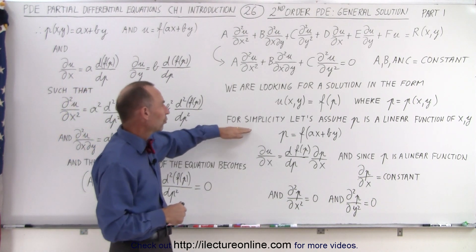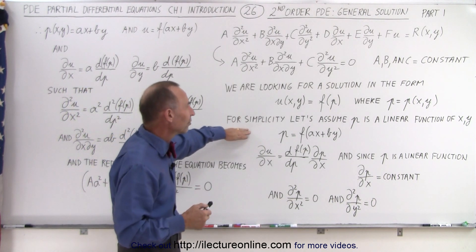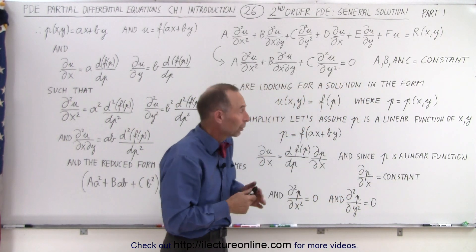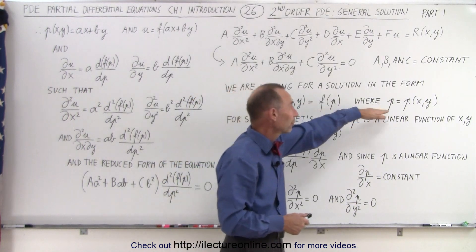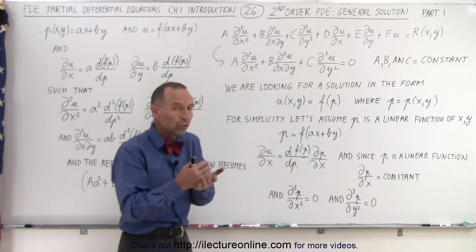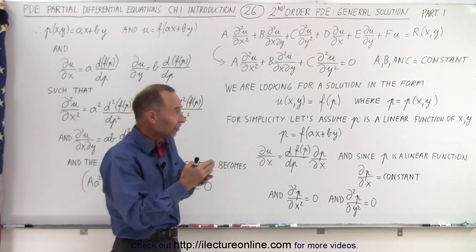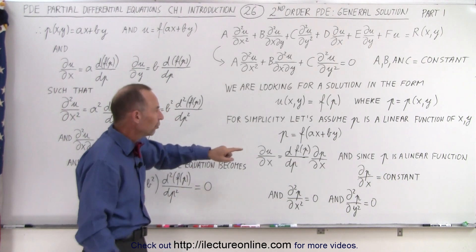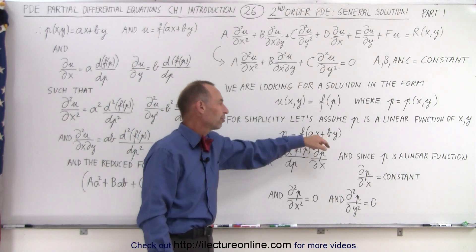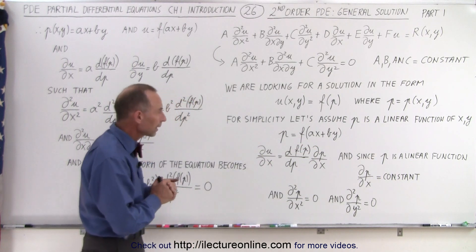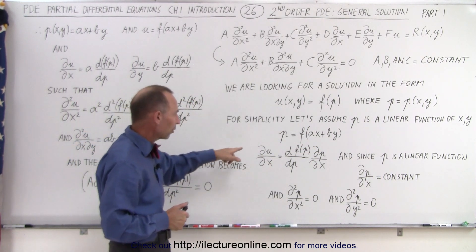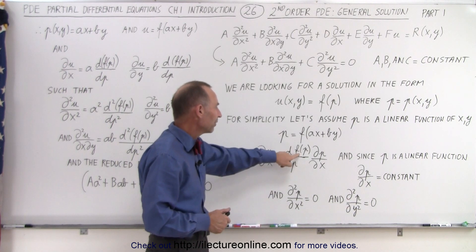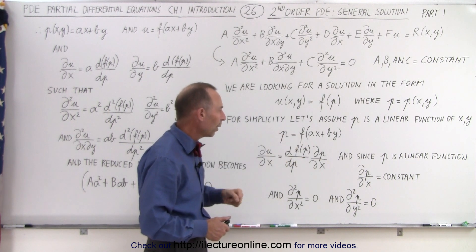In that case, we're going to also simplify things by letting p be a linear function of x and y. So not only are we looking for a solution in terms of the function of p, which is a function of x and y, we're also going to assume that p is actually a linear function, where x and y are raised to the first power only, so that our function will look something like ax plus by. Then we can write the partial of u with respect to x as a derivative with respect to p of that function of p.